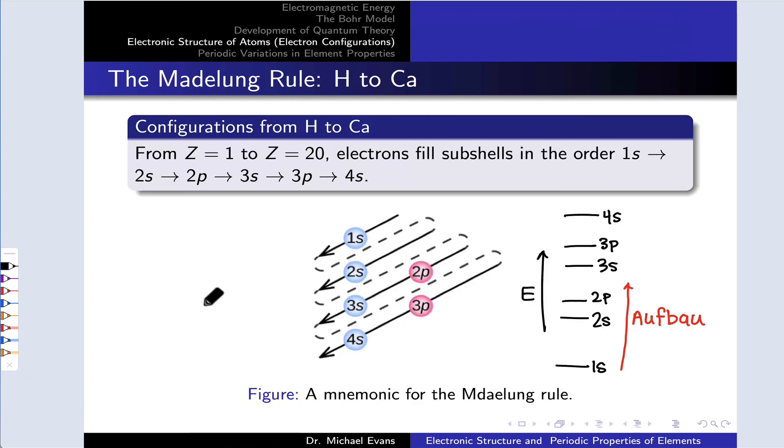For the first 20 elements, electron configurations follow a very clear pattern because the scaffold of atomic orbital energies doesn't change that much. At least in a relative sense, the ordering of these energies remains the same. We start by filling the 1S subshell. The 2S is next in energy, followed by the 2P, and then the 3S, and then the 3P, and then the 4S.